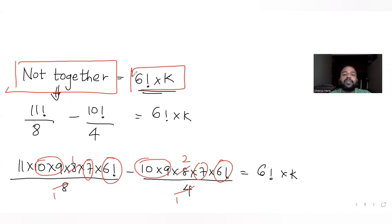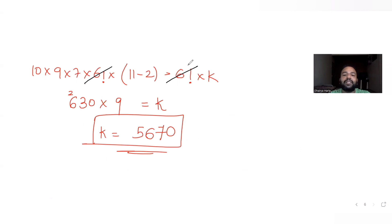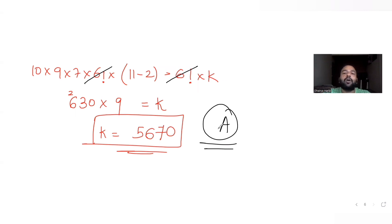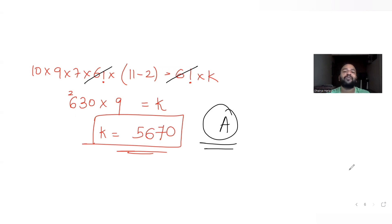Subtracting gave 11 factorial upon 8 minus 10 factorial upon 4, equated with 6 factorial into K, yielding K = 5670, matching option A. I will see you tomorrow with more questions from other topics. We are continuing our series on 11th, 12th as well as JEE preparation. Stay tuned, and do like, share, and subscribe to the channel and share these videos with friends preparing for JEE.